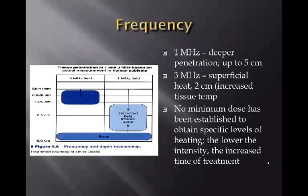Frequency on the machine is going to be 1 megahertz, which allows deeper penetration and can reach up to 5 centimeters. 3 megahertz is going to be superficial heat and reaches 2 centimeters, but you can get an increased tissue temperature because there is more friction between the layers of the superficial skin, which can raise tissue temperature up to 2 centimeters depth. No minimum dose has been established to obtain specific levels of heating. The lower the intensity, the more time of treatment is needed to get your results.